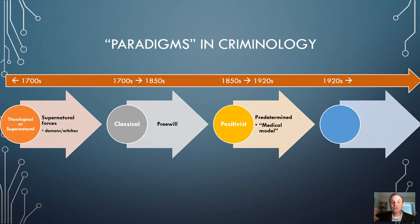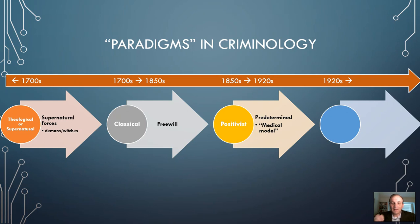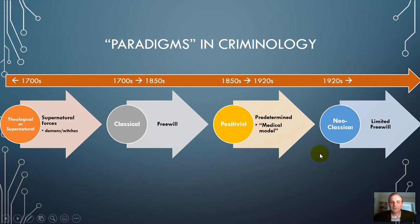In the 1800s, you start to see a shift toward a more positivist perspective — a medical model where people have a biological, psychological, or genetic predisposition to crime. That's when Lombroso and his theory of atavistic traits start to appear. Psychology begins to emerge, and asylums start popping up everywhere in the United States to address that. In the 1920s, you see a shift back toward the classical perspective, but now including aspects of the positivist perspective — the idea of limited free will, constrained by biological, psychological, genetic, or sociological factors.